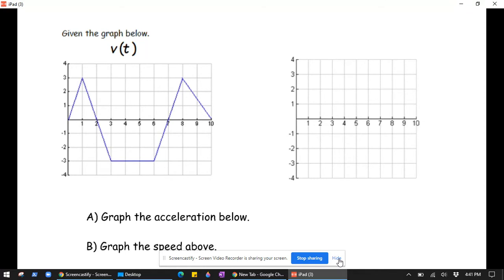So on the right we're going to graph speed. Speed is the absolute value of velocity. So I'm just going to note speed is going to be the absolute value of velocity. We'll graph that in a minute.